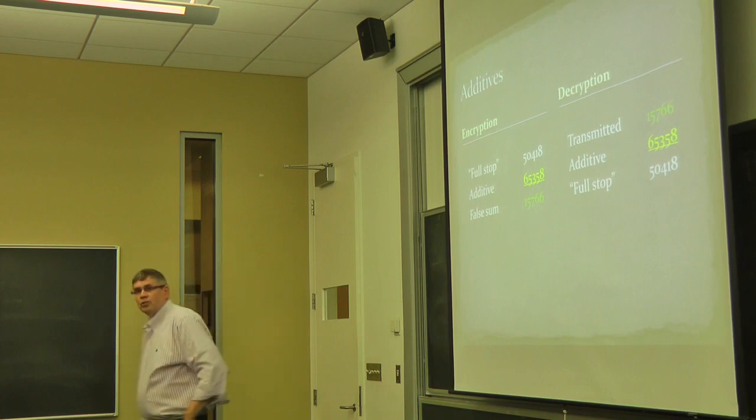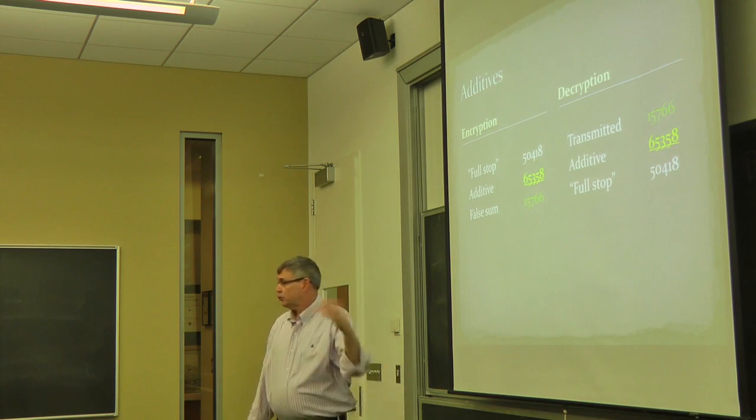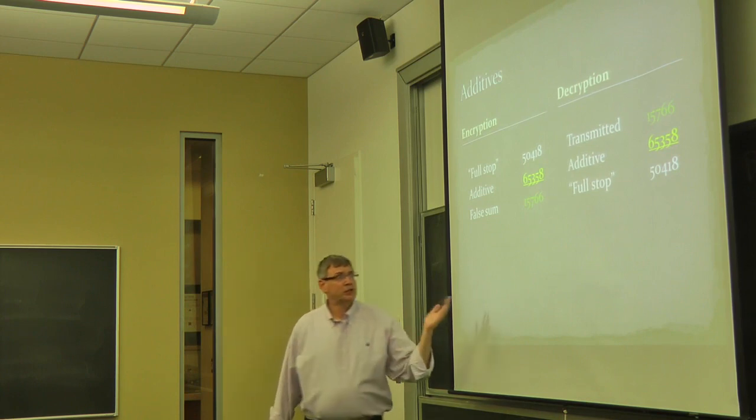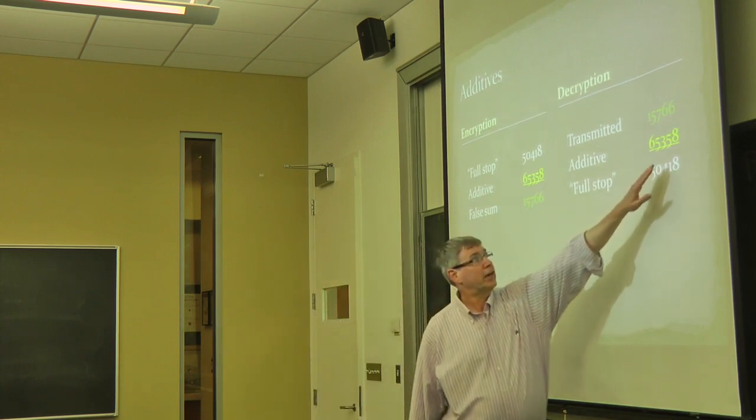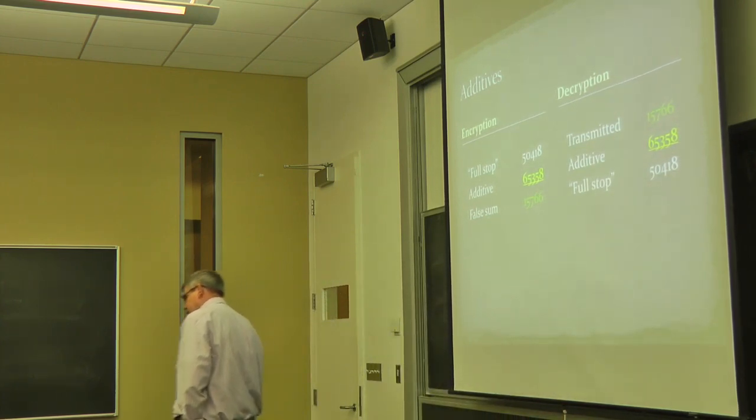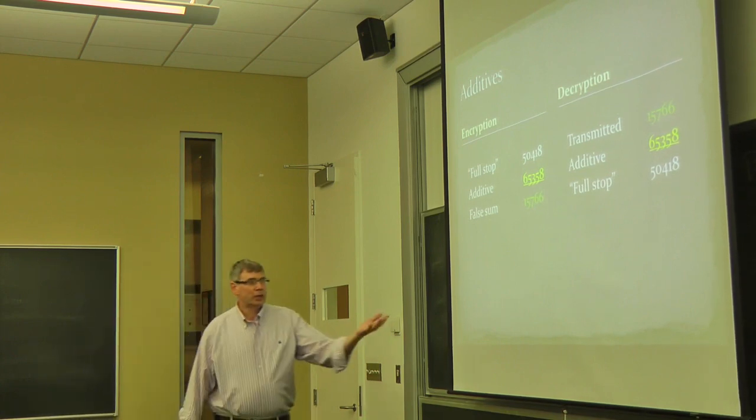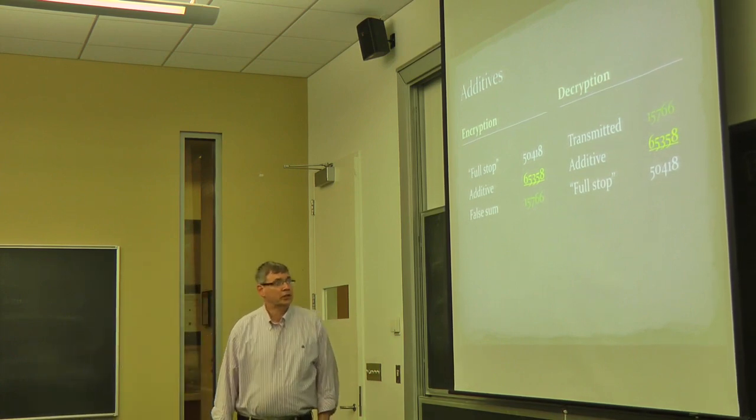Now, when the message was received, the operator who received it would take that transmitted false sum, strip off the additive. And they stripped off the additive by doing a false subtraction. So here, 8 from 6, you have to think 8 from 16 or think subtraction mod 10. They get back the code group, look it up in the book, and they know what it stands for.